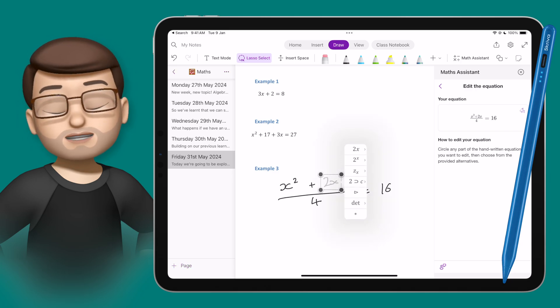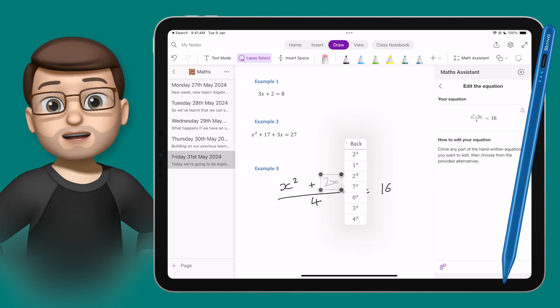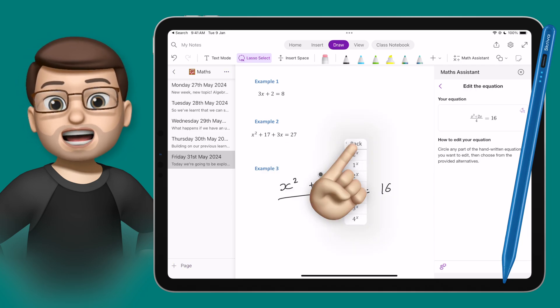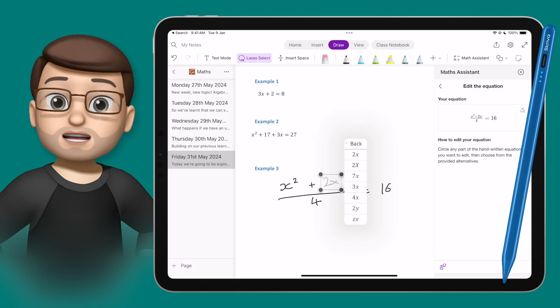When you do this, it will then show you a pop-over menu of different things that perhaps you might have meant when you did that writing. Maybe I meant a Z rather than a 2, or maybe the X should have been a power. All of those different possibilities, it's using machine learning to figure out.